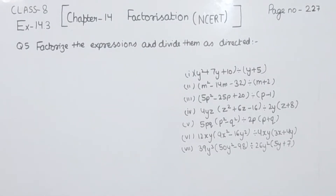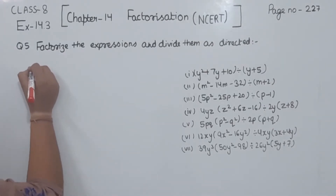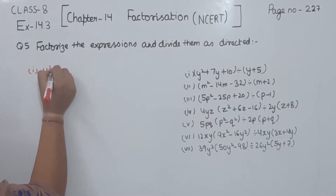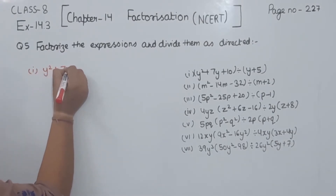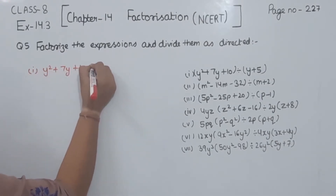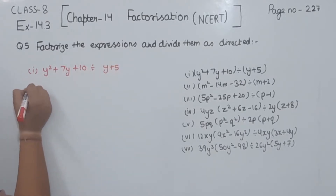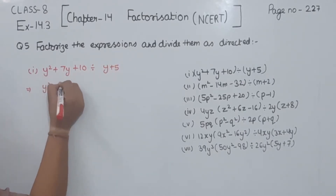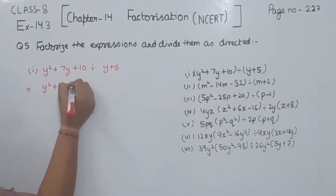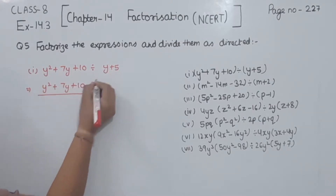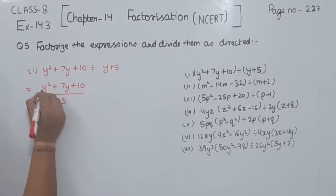Factorize the expression and divide them as directed. We are having 7 parts in the question. We are going to start with the first one. The first one is y squared plus 7y plus 10 divided by y plus 5. I am going to write here y squared plus 7y plus 10 divided by y plus 5.